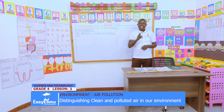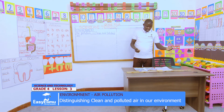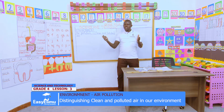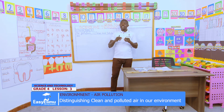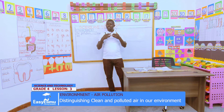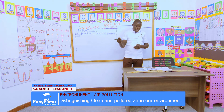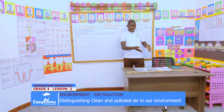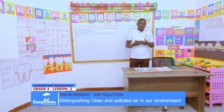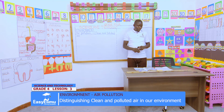Now I can see you can understand polluted air and clean air. When we say air is polluted, it means that pollutants are visible — we can clearly see pollutants affecting the area or environment around us. Clean air is air that is very conducive for our breathing and for everything found in the environment.